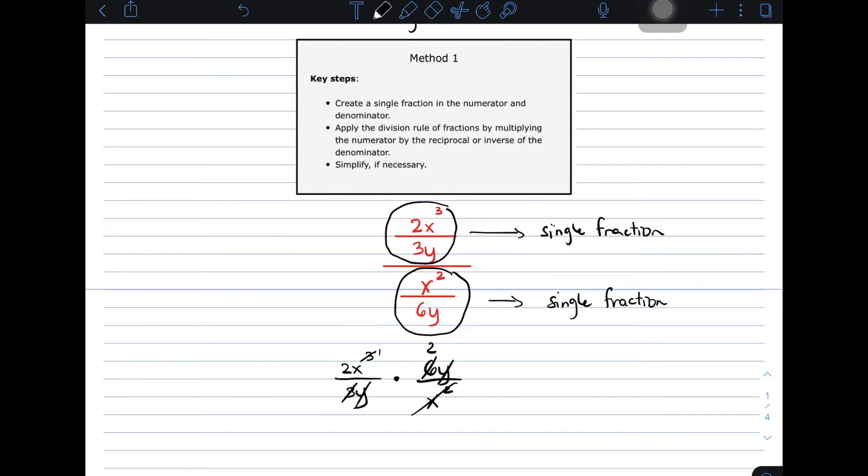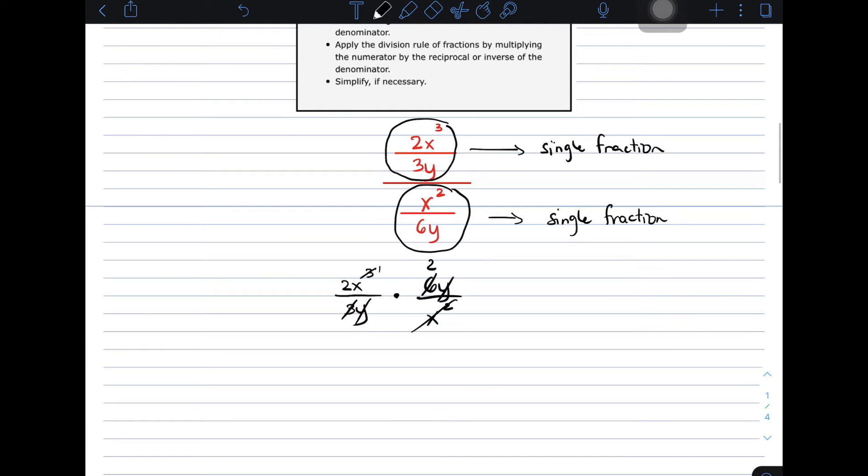So we have here 2x over 1 times 2 over 1. And multiplying these fractions, the simplified form we have is 4x. This is the answer for item number 1 using method number 1.